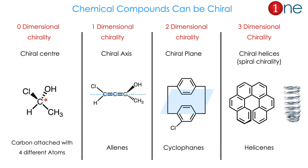One dimension is chiral axis — the chiral axis is created by two perpendicular planes. For chiral plane, you have cyclopropane and ansa compounds. And helical chirality, also called spiral chirality, is found in compounds with a spring-like structure.